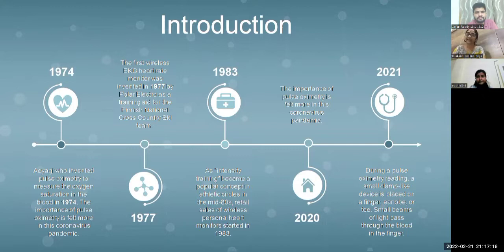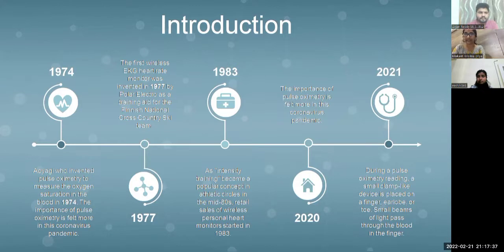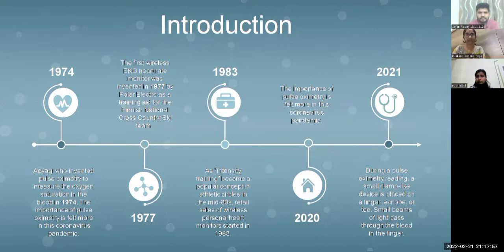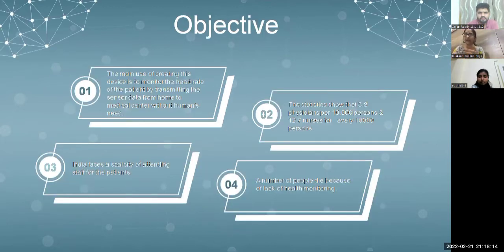In the introduction, it started in 1974 when Aoki invented the Pulse Oximeter to measure the oxygen saturation of blood. The importance of Pulse Oximeter grew in the following years, and the first wireless heart rate monitor was invented in 1977 by Polar Electric. In 1983, as intensity training became popular, it came into wider use. In 2020, the importance of Pulse Oximeter rose again during the coronavirus pandemic. The device is a clamp-like device placed on a finger or earlobe where a small beam of light passes through the blood and a sensor generates a reading.